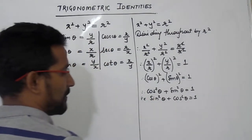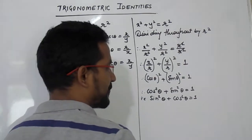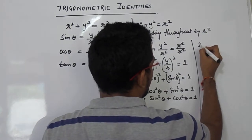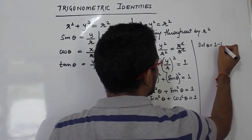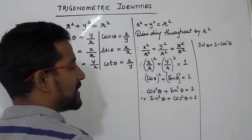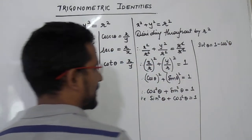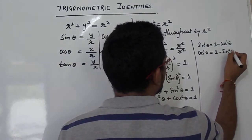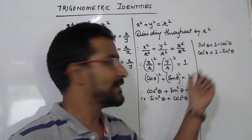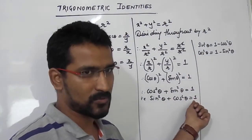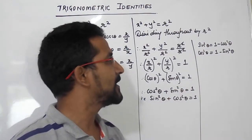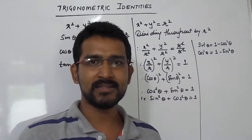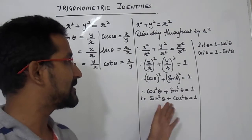This is the first identity, which is very useful. We can also write it in alternate forms: sin²θ = 1 − cos²θ (by shifting cos²θ to the right), and cos²θ = 1 − sin²θ (by shifting sin²θ to the right). These are all very useful forms of this first identity.